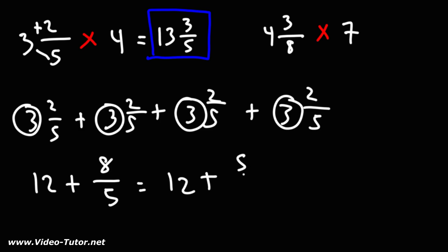8 over 5, you could write that as 5 over 5 plus 3 over 5. 5 over 5 is 1. 12 plus 1 is 13, so you get 13 plus 3 over 5, which is 13 and 3 fifths. That's another way in which you could see it.